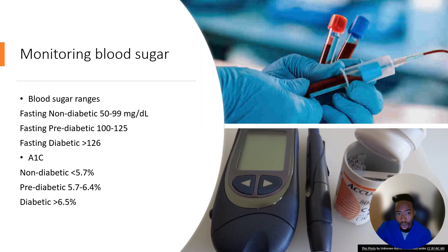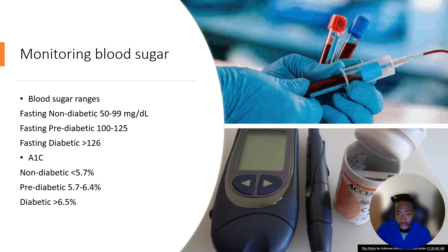Monitoring blood sugar. On the screen, our blood sugar ranges are for those who are non-diabetic, pre-diabetic, and diabetic. Blood sugar can be checked at home, on the go, or within a medical facility. This can be done via a finger stick which checks capillary blood sugar levels, giving you a fast but accurate read. A venipuncture can also be done to check the body's current sugar level through tests like the BMP, or basic metabolic panel. A1c is another blood test that can be completed to check the body's average blood sugar over the past three months.